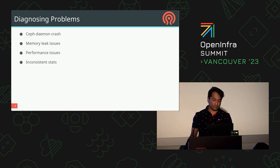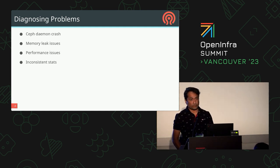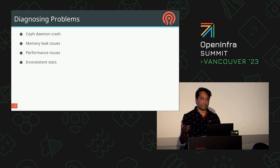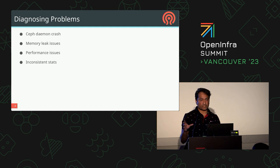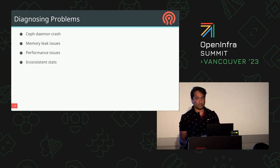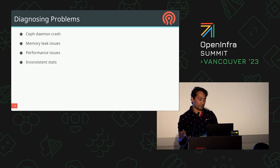You will often see safe daemon crashes, whether it's OSD, MON, or any other daemons. You look at safe status for pointers — whether any daemons have recently crashed. The crash module likely collected crash information. Sometimes you don't see it in the Rook environment because it has something to do with core dumps not getting generated in the environment.